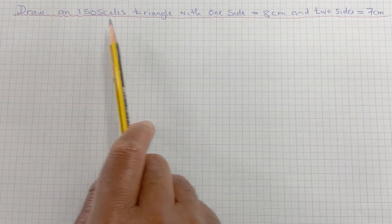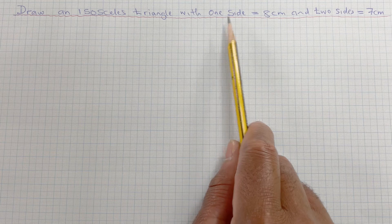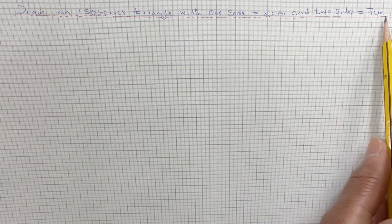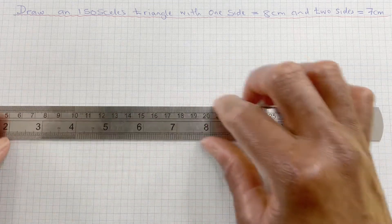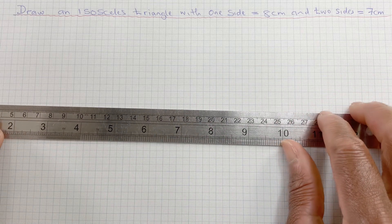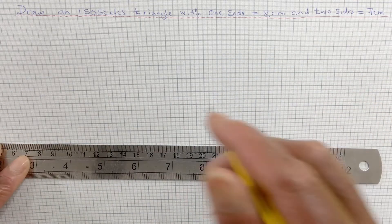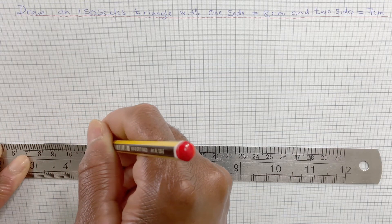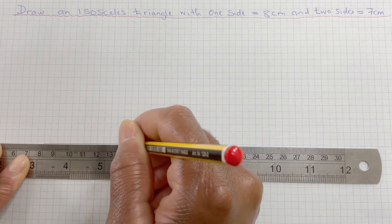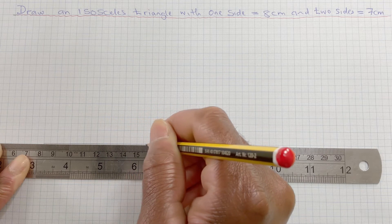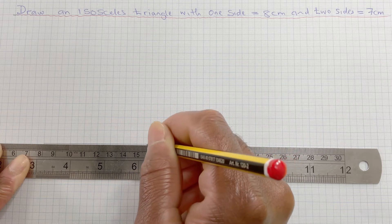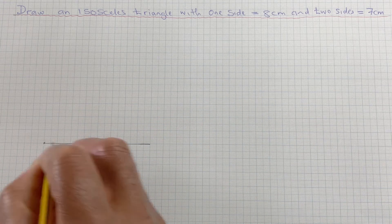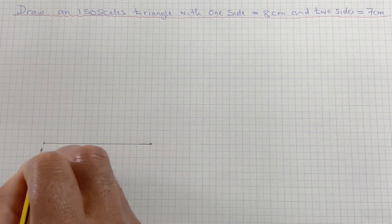Draw an isosceles triangle with one side equals 8 cm and two sides equals 7 cm. So we need to draw the 8 cm length, so that's 1, 2, 3, 4, 5, 6, 7, 8, so that's point AB.